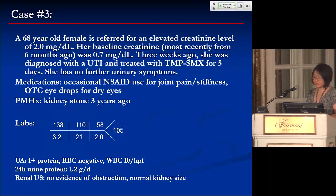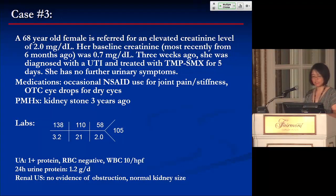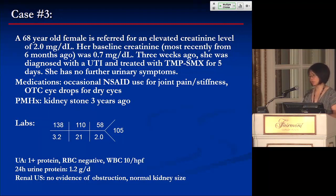Case three is a 68-year-old female referred for an elevated creatinine of 2.0. Her baseline six months ago was 0.7. Three weeks ago, she was diagnosed with a UTI and treated with Bactrim for five days, with no further urinary symptoms. Her medications include occasional NSAIDs for joint pain and over-the-counter eye drops for dry eyes. Past medical history is notable for a kidney stone three years ago.